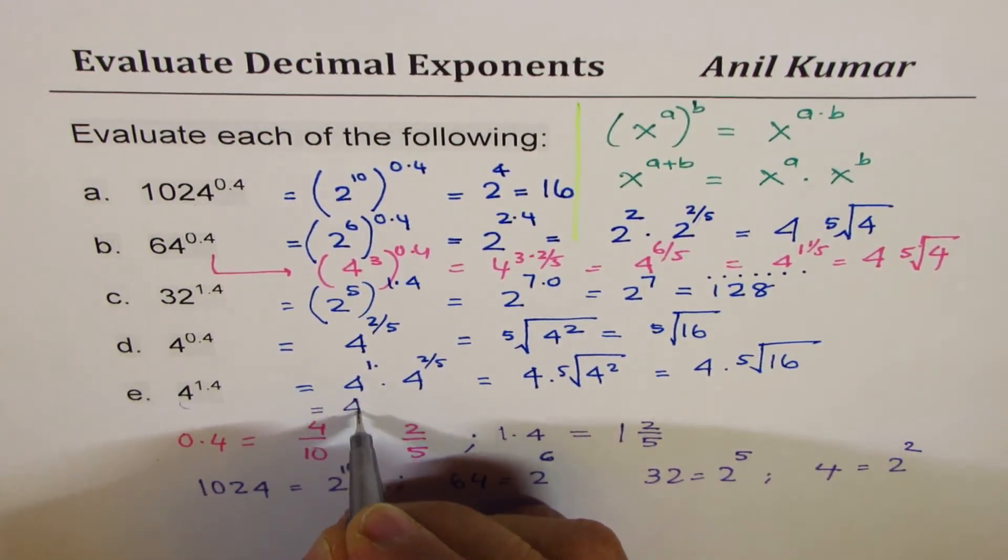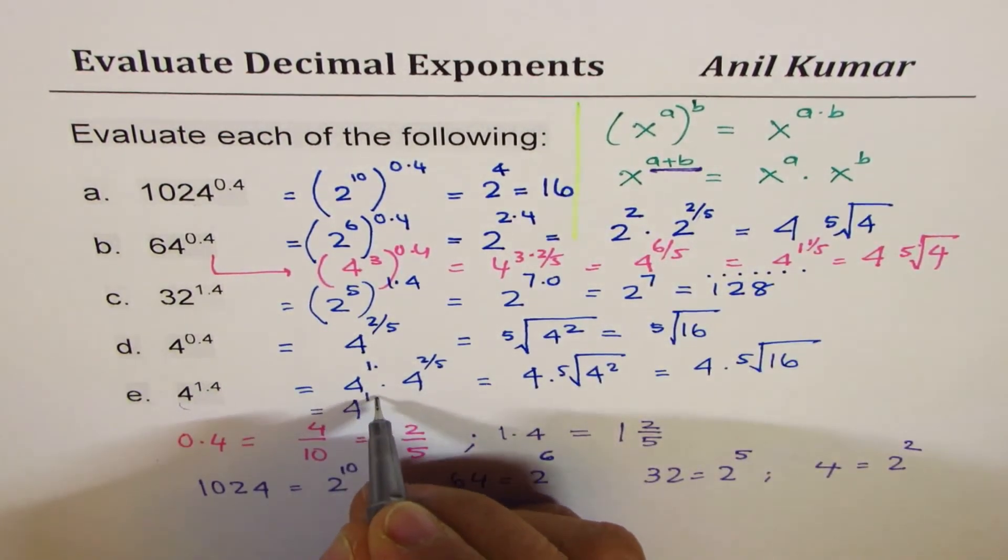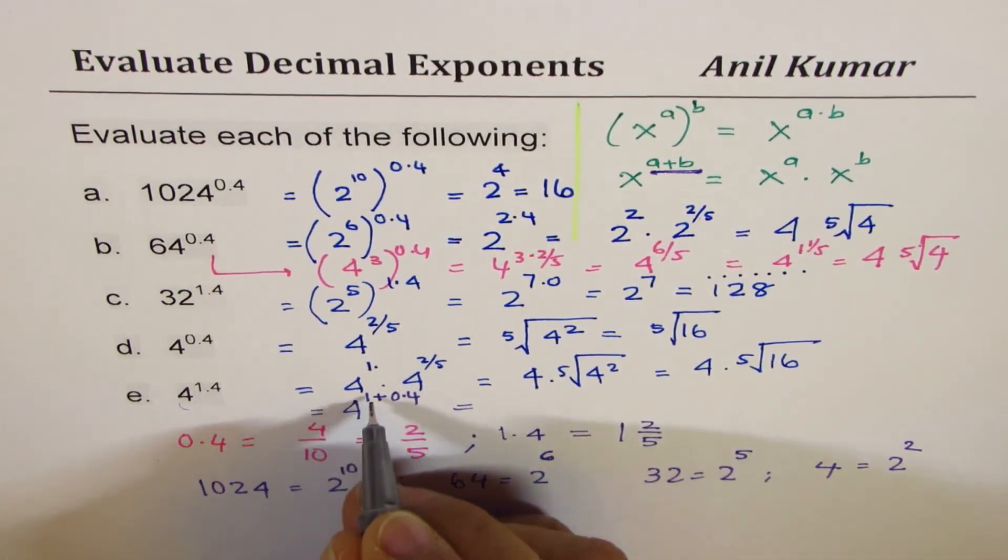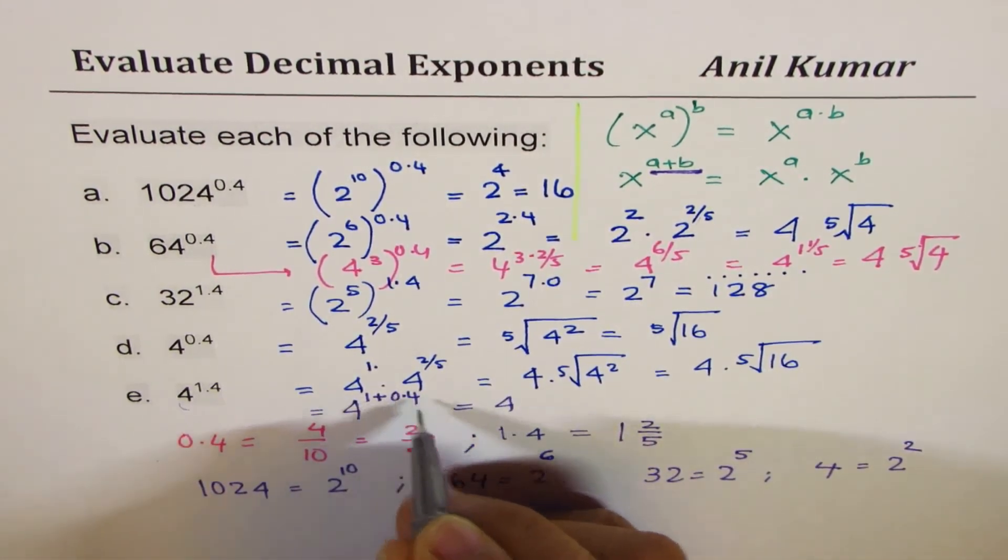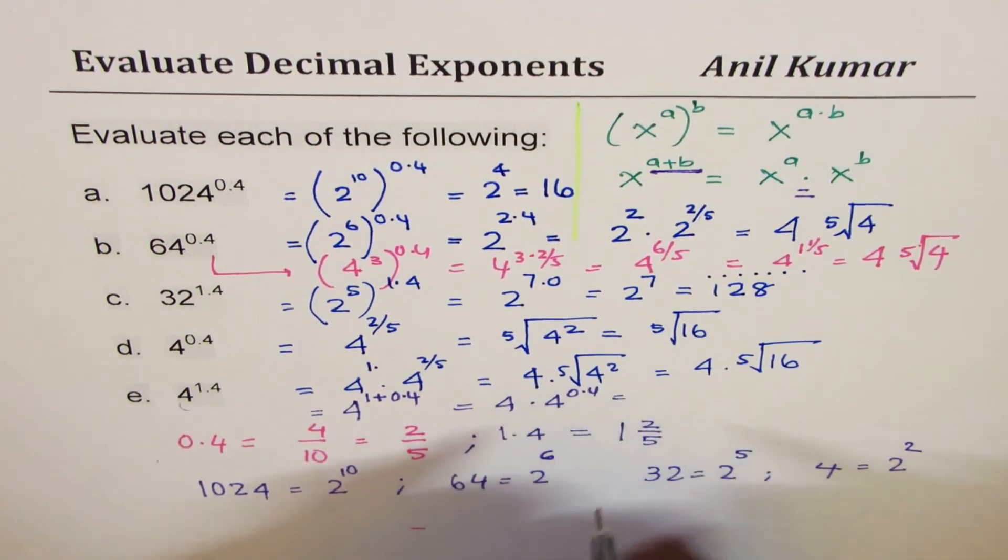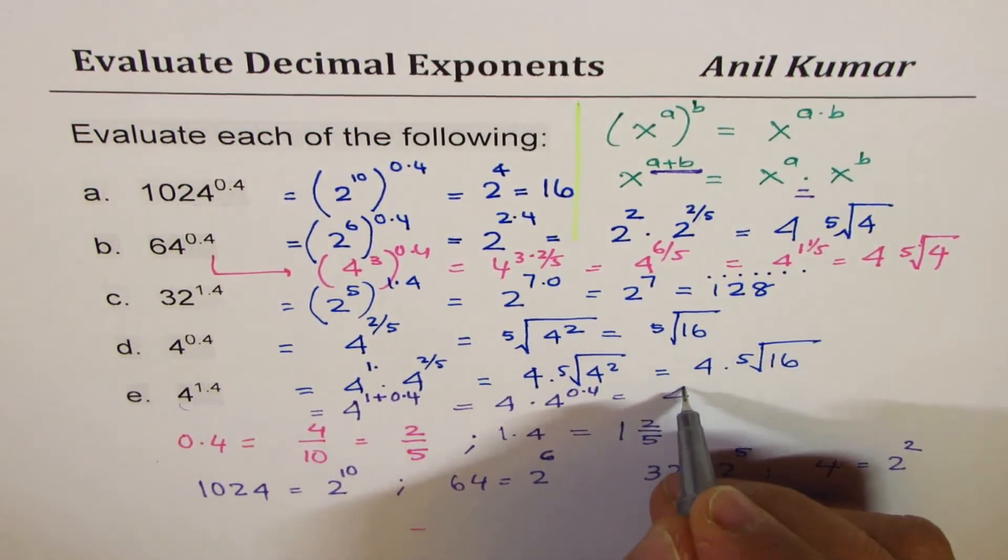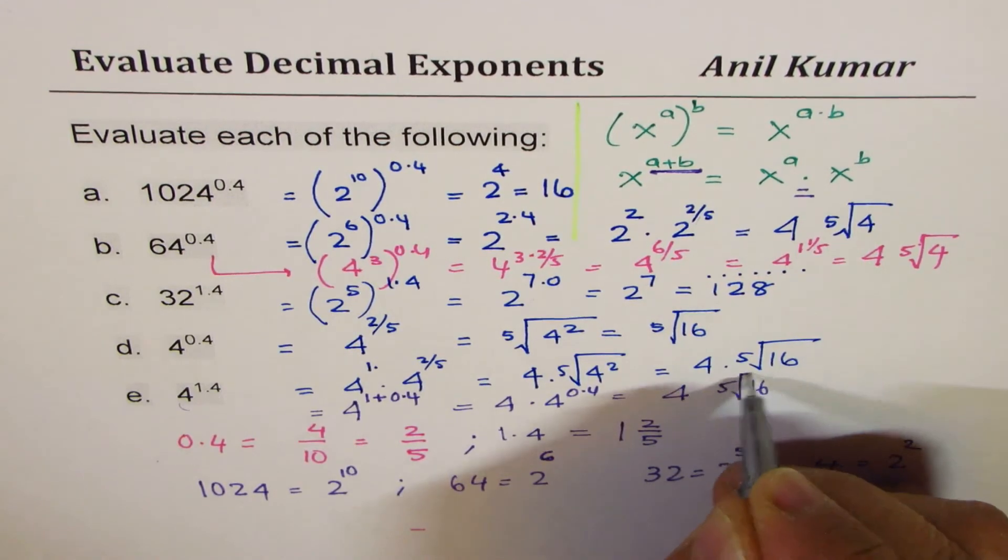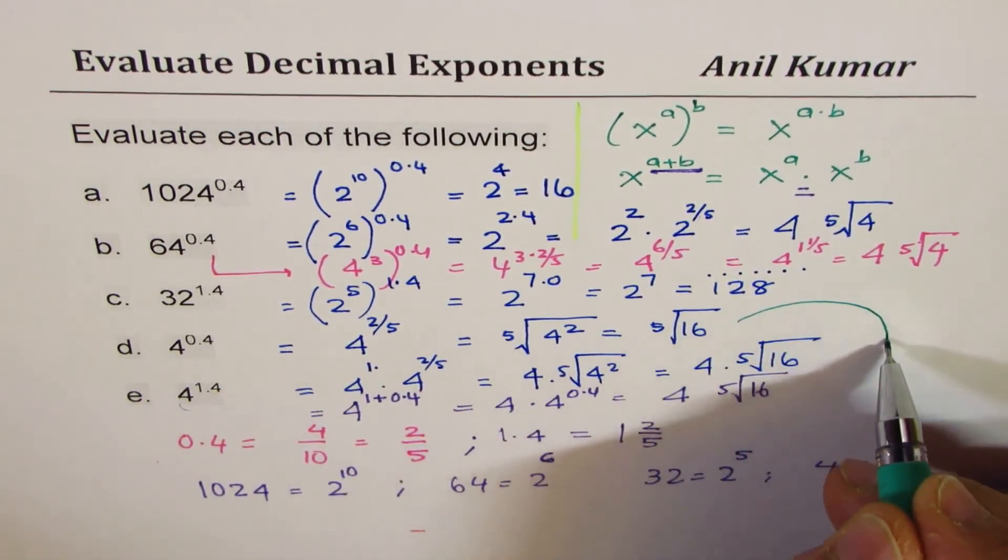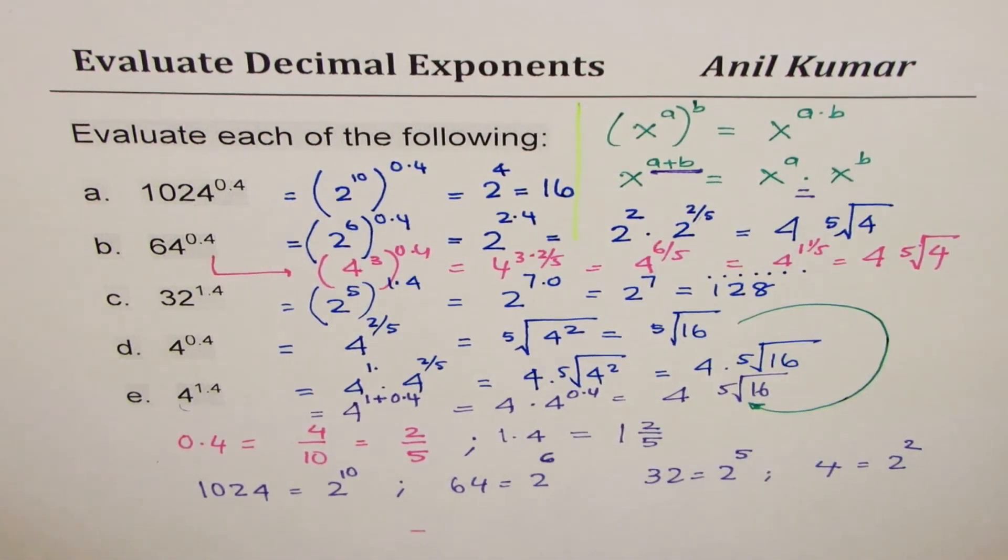You could write this as 4 to the power of a plus b. 1 plus 0.4. Does it make sense to you? So 4 to the power of 1 plus means product rule times 4 to the power of 0.4. Now 4 to the power of 0.4 is this expression. So we have 4, 5th root of 16. So what we did here was we kind of pulled it in. Do you see that? So likewise,